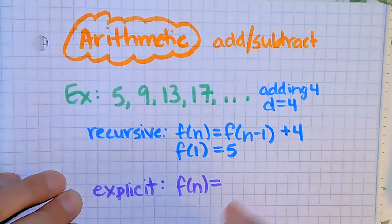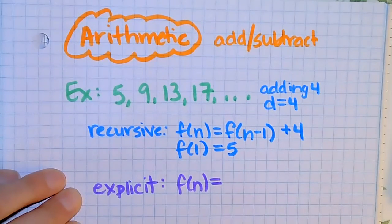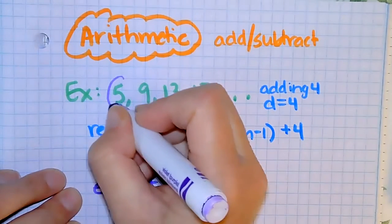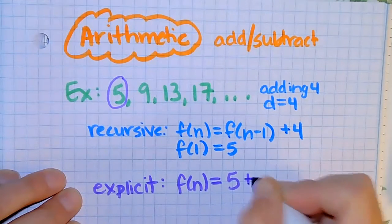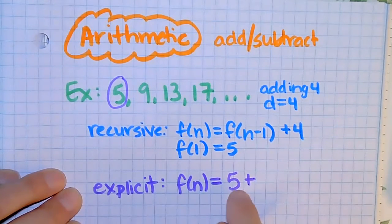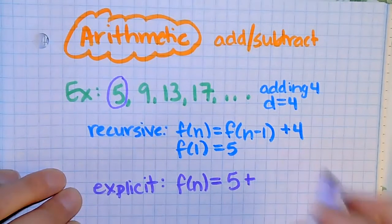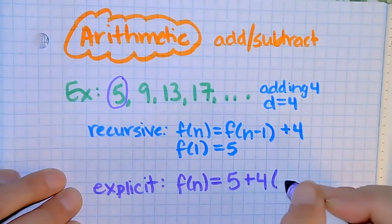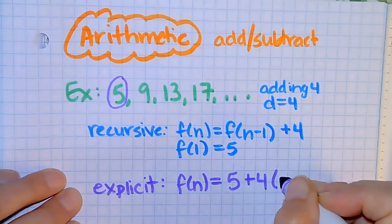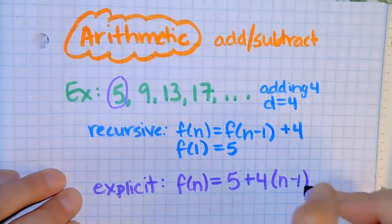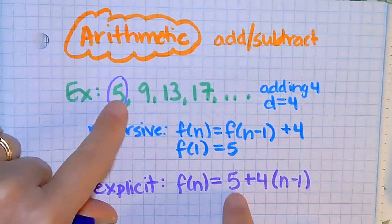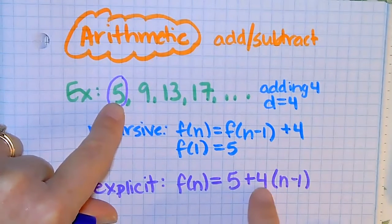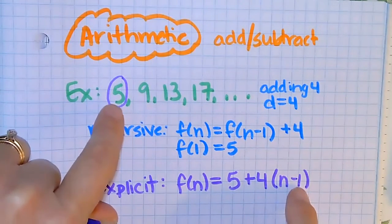What you're going to do is decide what you want to start with. If I want to start with this value — my first value — just understand that if you're starting with your first value and you're adding four, instead of N times like you would for the zero term, it's going to be N minus one. So if I start with the first term, which is five, I'm adding four times N minus one.